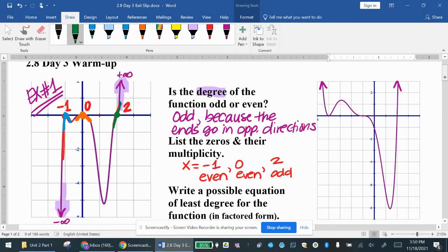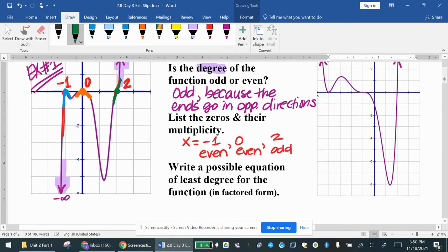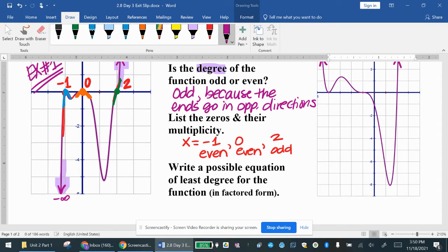Now in terms of writing the equation of least degree in factored form, you want to start by giving it a name. So say f(x) equals. Then you're going to put all of the zeros in factored form. So as factors, negative one is x plus one. Zero is just x, and then x minus two.